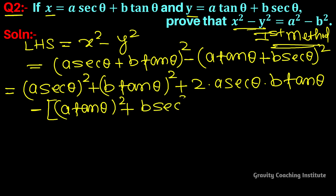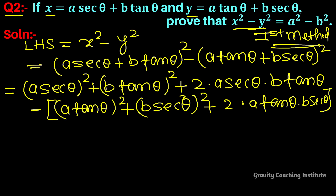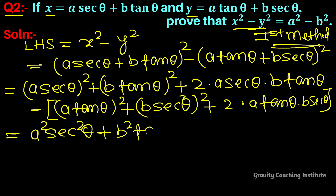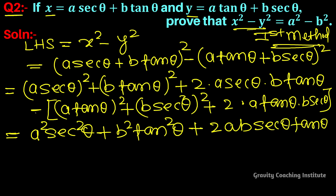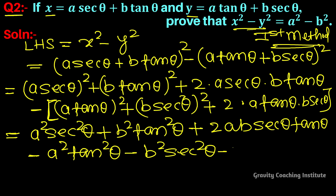Minus the expansion of the second bracket: a²·tan²θ + b²·sec²θ + 2ab·sec θ·tan θ. Opening this bracket with sign change gives: minus a²·tan²θ minus b²·sec²θ minus 2ab·sec θ·tan θ.